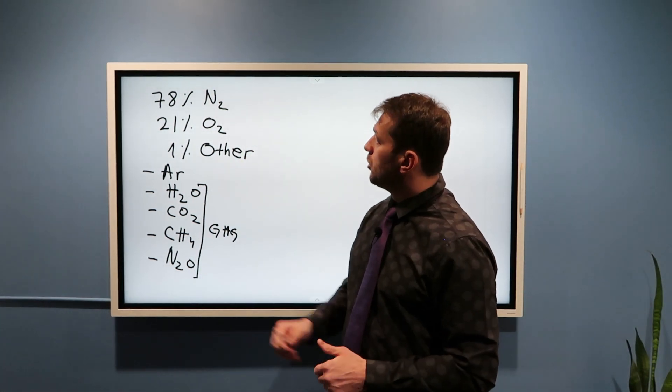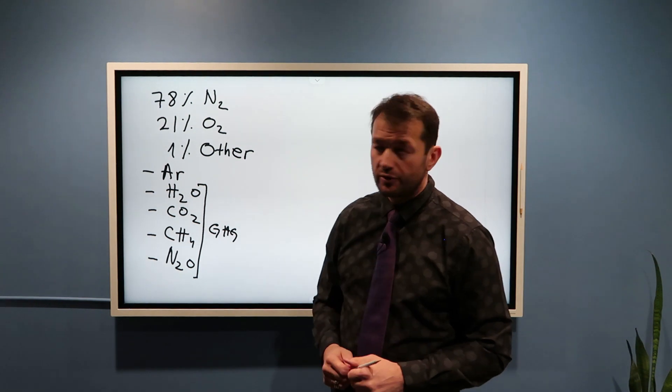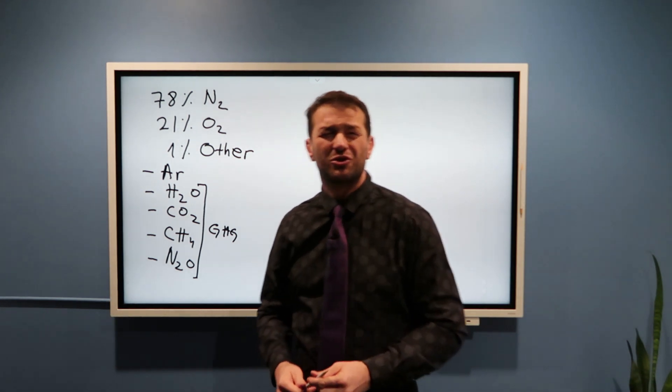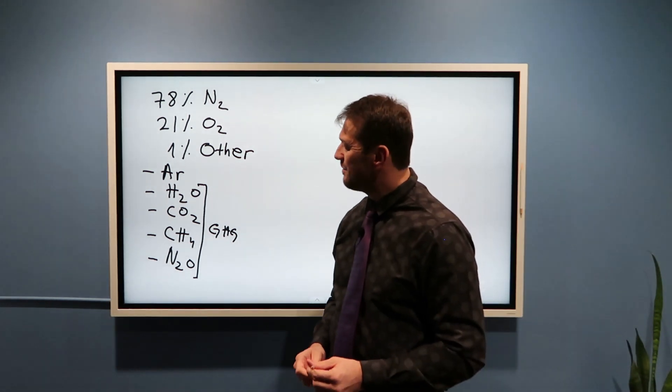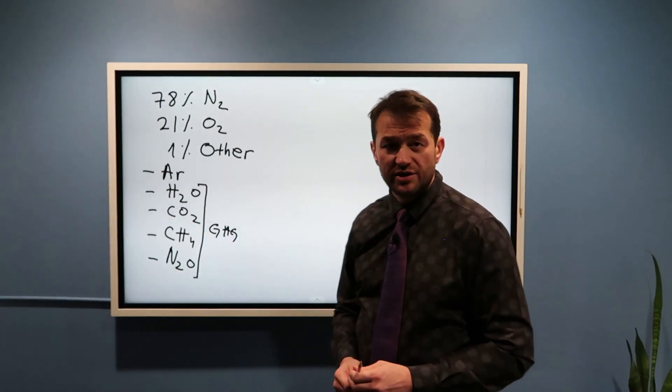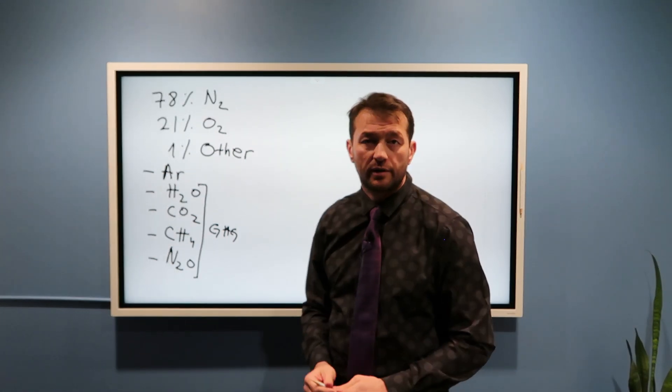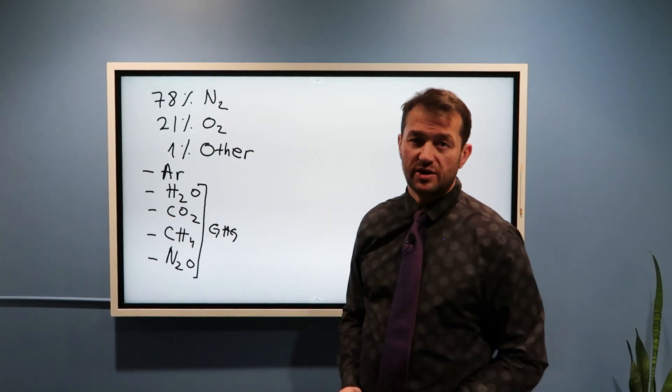And 1% are other gases, as I said, mostly argon, but argon is really not so important for weather and climate. A source of argon is typically radioactive decay of potassium-40 in the crust of Earth. And then we have greenhouse gases.